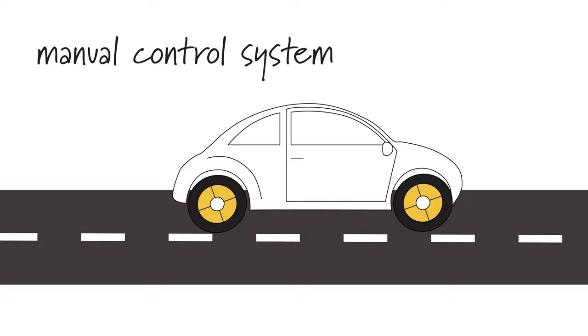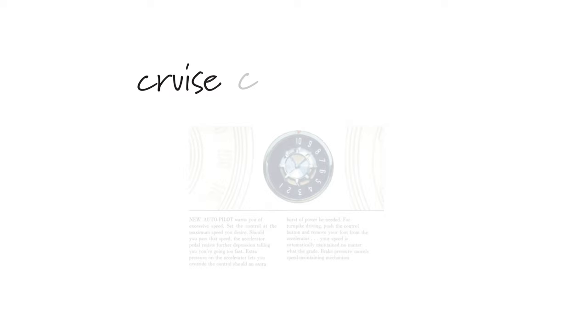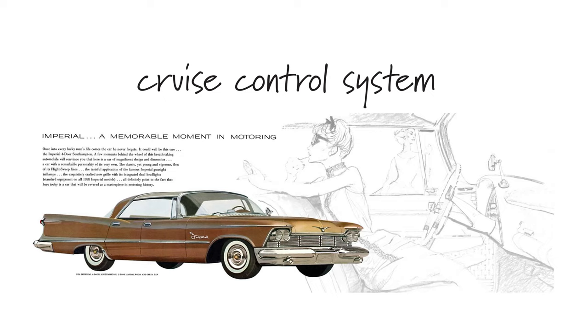Since this task is tedious on a long trip, engineer Ralph Teeter invented the cruise control system, which first appeared on the 1958 Imperial, at that time a division of the Chrysler Corporation under the name Autopilot.